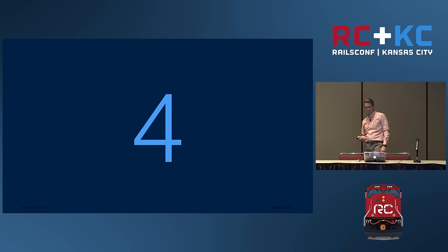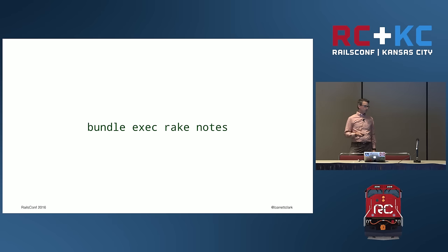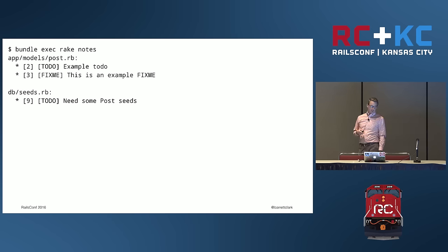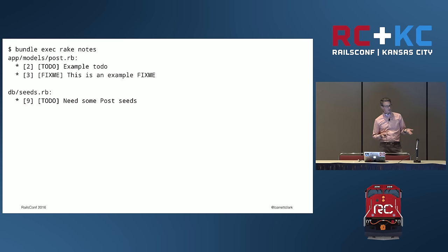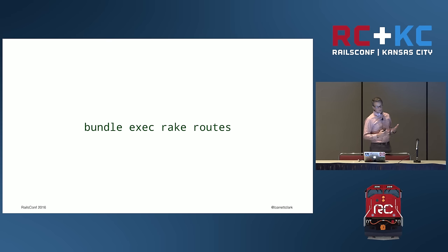Rails can also tell us stuff. We can see all the notes we've sprinkled throughout our code with `bundle exec rake notes`. It'll go through and look at all the TODOs and FIXMEs in all the files. There's also an OPTIMIZE tag. We do that and we see in the posts model there's a TODO on line two, a FIXME on line three, and in the seeds file a TODO to create some blog posts. Beyond comments, your app can tell you things about itself — what does it know how to do? The routes file is one of the first places I look when I pick up a legacy Rails app.